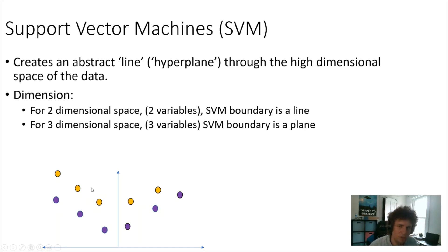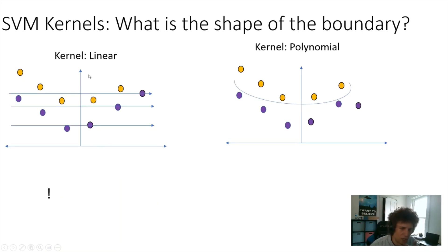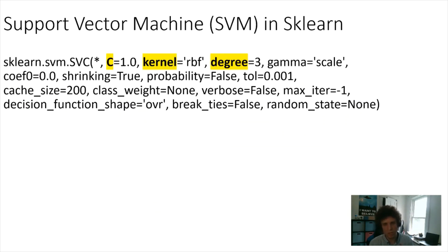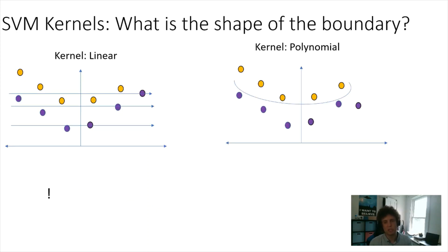The power of SVM kernels is that they let you define the shape of the decision boundary. For example, if data can't be separated with a linear line, a polynomial-shaped boundary might work well. The default is the RBF (radial basis function) kernel, but we'll also look at linear and polynomial kernels, which can sometimes outperform RBF on certain datasets.